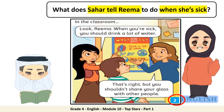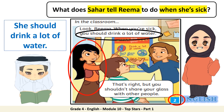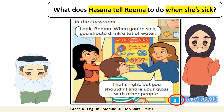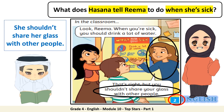Let's move to frame number two. What does Sahara tell Rima to do when she's sick? She should drink a lot of water. What does Hasna tell Rima to do when she's sick? She shouldn't share her glass with other people.